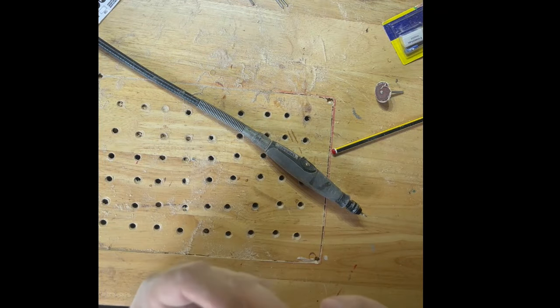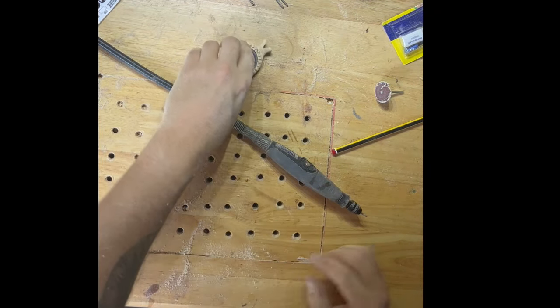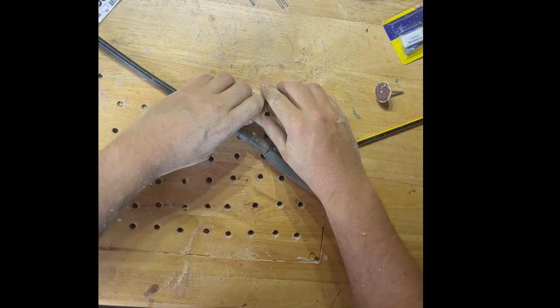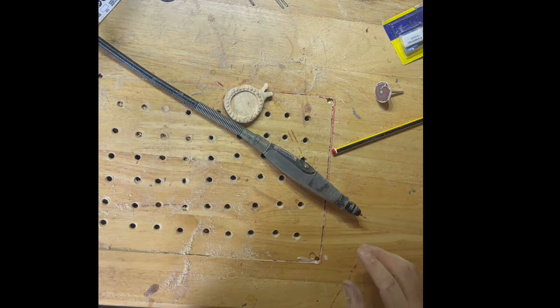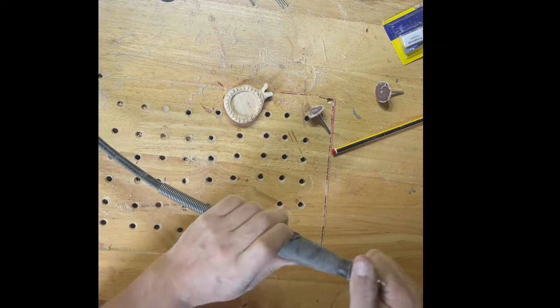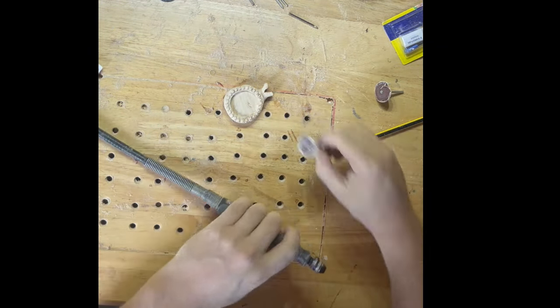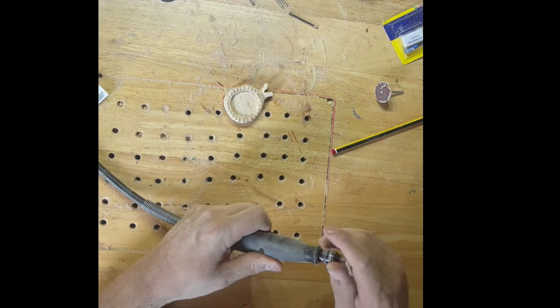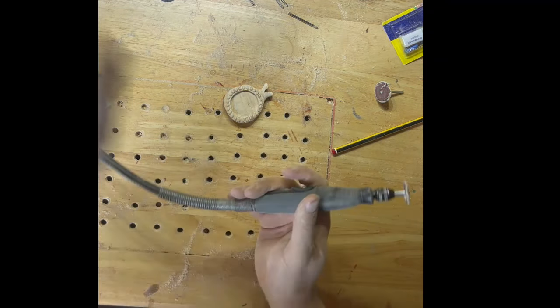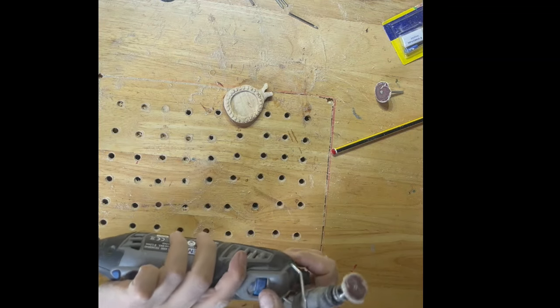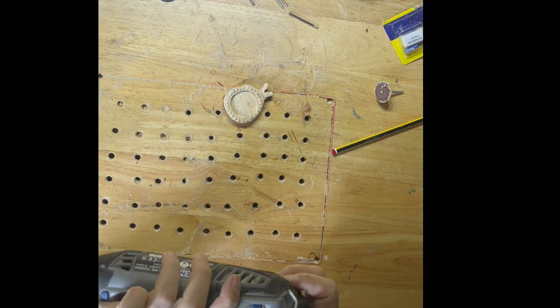And there we go. And just double checking the cabochon still fits which it does. And now just going to do a final sand. The great thing with these flap sanding discs as well is they get into all of those nooks and crannies. So it does a really good job at smoothing everything out even between those little gaps there, between those circles.